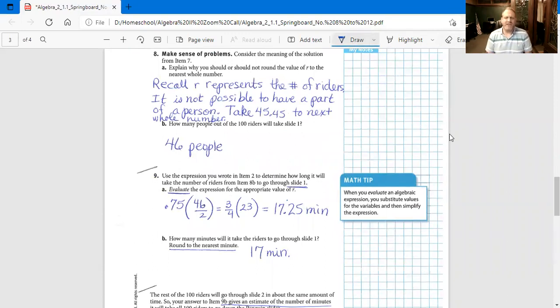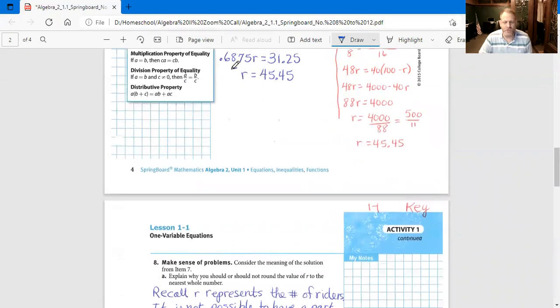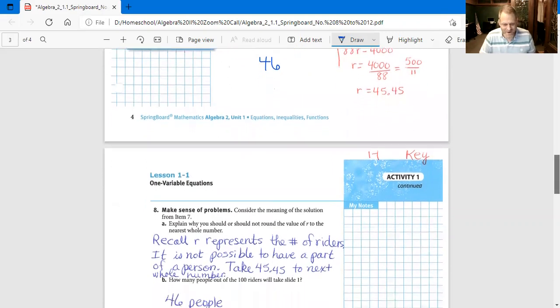Alright guys, make sense of problems. Consider the meaning of the solution from item number 7. Explain why you should or should not round the value of R to the nearest whole number. Let's go back and look at number 7. We came up with R for riders equals 45.45. The reason we need to round it up is because they are people, right? Can't have 45.45 people on two rides.